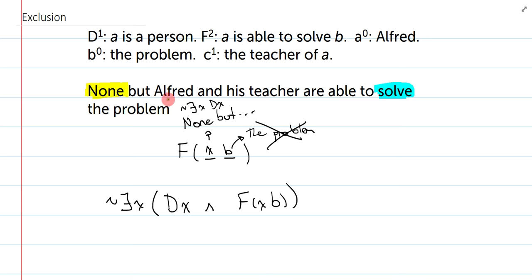Okay. So, let's give this a shot. It's not the case that there exists a person and FXB. So, what do I have right now? I say, it's not the case that there is a person that can solve the problem. Okay. Well, that's pretty close. But I haven't captured the exclusionary clause that says, but Alfred and his teacher. So, I need to actually revise this to include the exclusionary clause.